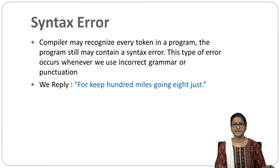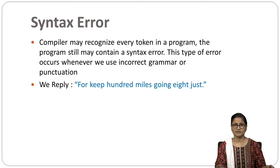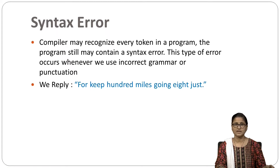A SyntaxError occurs when the compiler recognizes every token but the program still contains incorrect grammar or punctuation. Using the motorist analogy: if we say 'for keep 100 miles going 8 just,' each word is individually recognizable as English, but they are combined in a senseless and convoluted manner. The parts of speech are not in correct positions for English grammar, resulting in a SyntaxError.